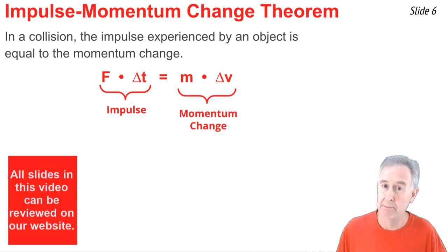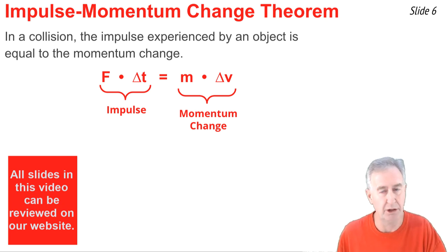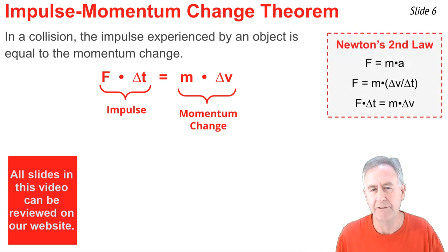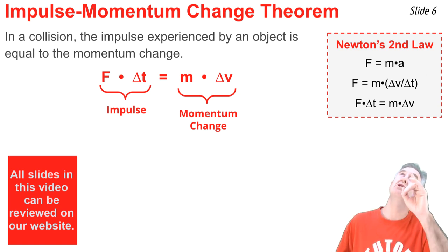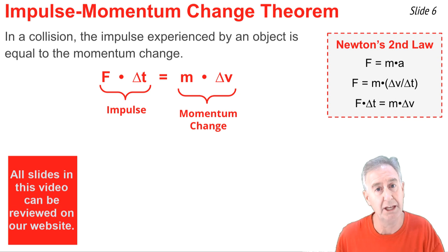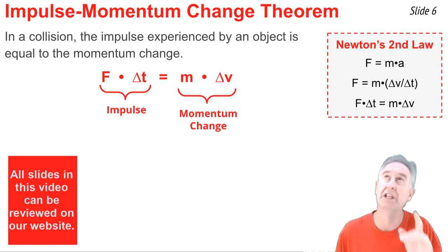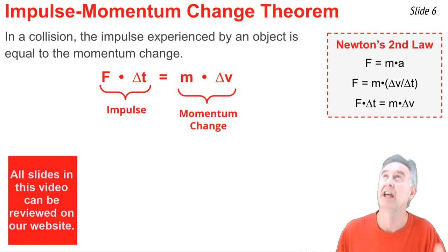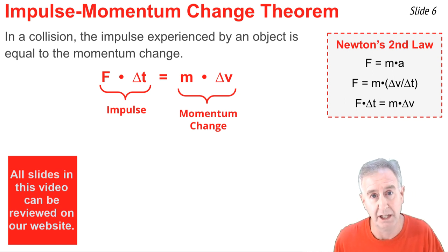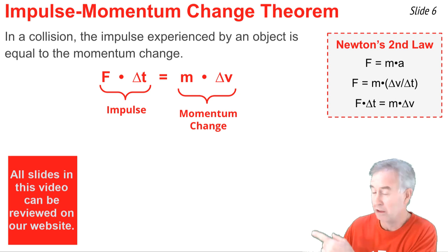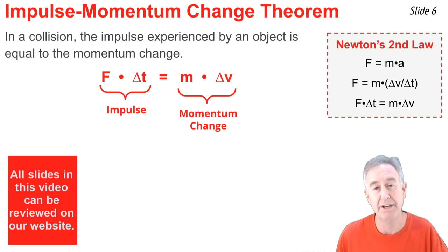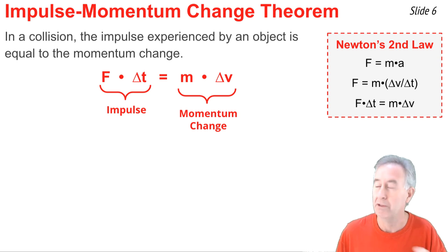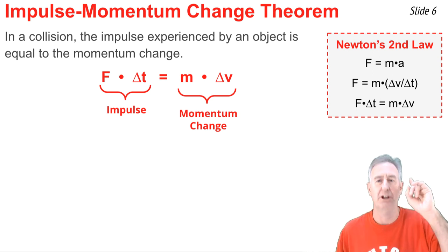This equation is known as the impulse momentum change equation: impulse equals momentum change. It's nothing new if you've been through Newton's laws. Newton's second law says F = ma. If we substitute for acceleration — delta v divided by delta t — the equation becomes F = m times delta v divided by delta t. Multiplying both sides by delta t gives us the impulse momentum change equation: F·Δt = m·Δv. So this is a new way of looking at an old idea.